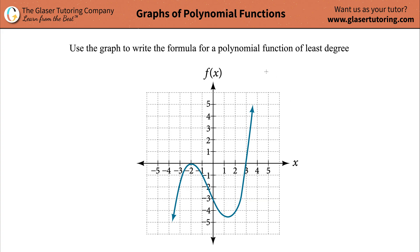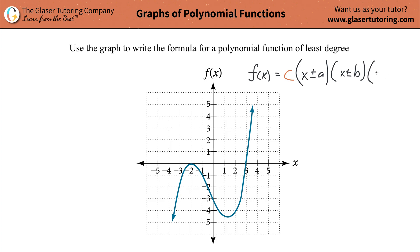It turns out we can use a very simple model. We're going to write f of x is equal to some coefficient c, multiplied by certain factors. These factors are going to be x plus or minus some constant value a, multiplied by x plus or minus some constant value b, times x plus or minus some constant value c.